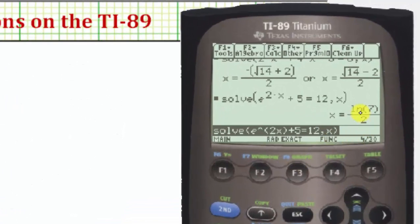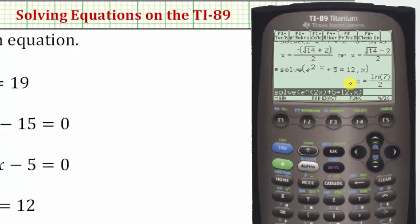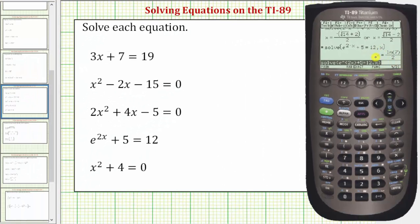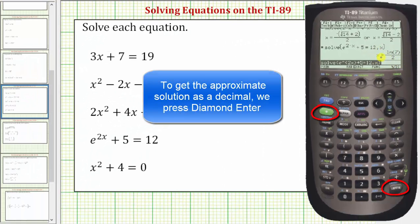And notice our exact solution is x equals natural log 7 divided by 2. And again keep in mind if we have a solution that involves a natural log, it can be written in different forms or with logs of different bases. Because our solution contains natural log, we'd have to solve this equation by hand using natural log in order to get the solution in this form.